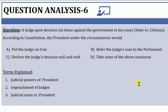The impeachment of judges can be done only after an address by each house of parliament, supported by the majority of the total membership of that house, and by a majority of not less than two-thirds of members of the house present and voting, presented to the president. Then, on the grounds of proved misbehavior and incapacity, the judge can be removed. This impeachment of judges comes under Article 124.